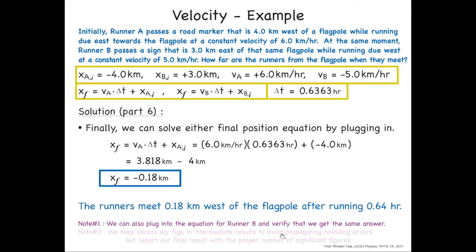After running 0.64 hours. Note that if you wanted to, you could plug this time into the other equation, the one for VB and XBI, the one for the second runner, and you should get the same answer. That's a nice double check. Also, just a quick note, we want to keep excess sig figs while we do the intermediate calculations. So even though we really only want to report it to two sig figs, I kept some of these intermediate values to three or four sig figs so that we didn't get rounding errors.